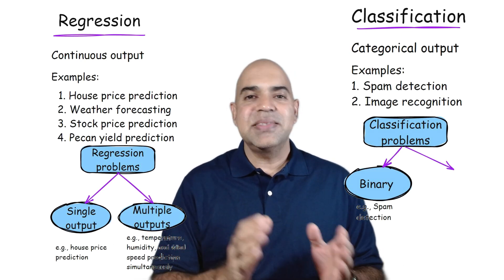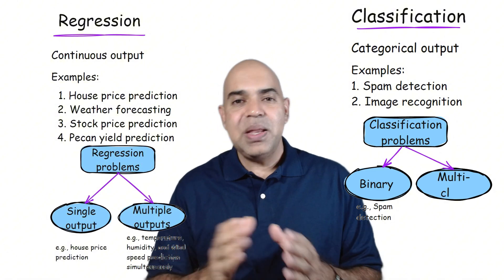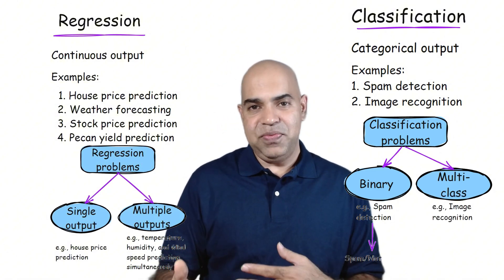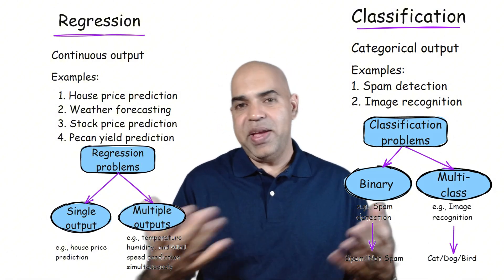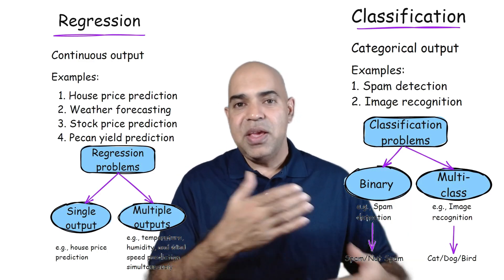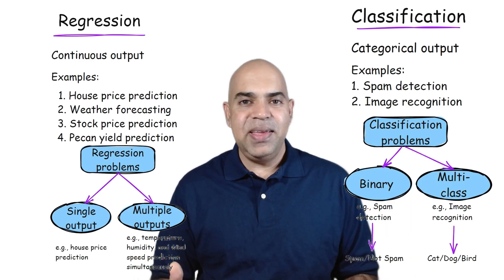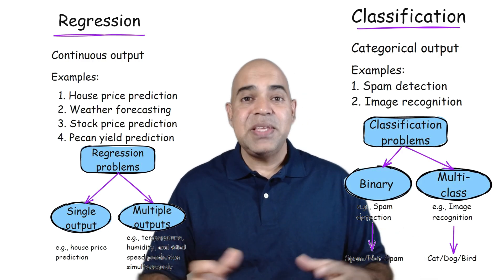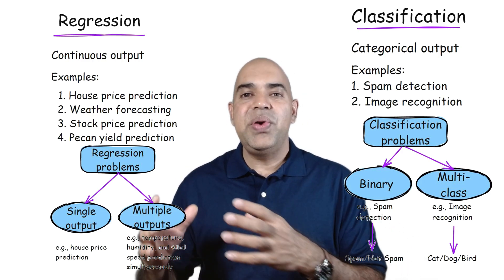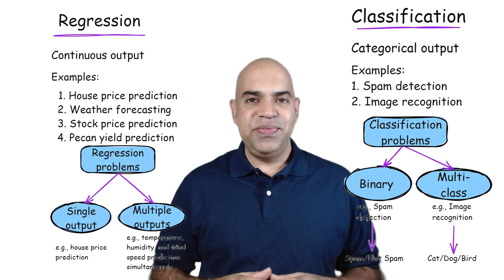In multi-class classification, there are multiple categories as said before. For example, classifying an image as either cat, dog, or bird. The main idea is, in classification problems, the output is a category level, not a continuous value.